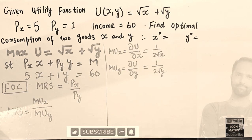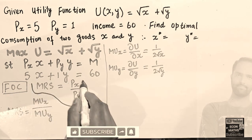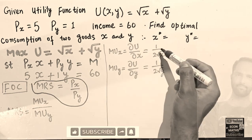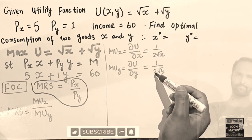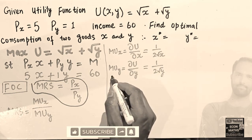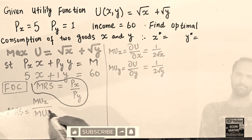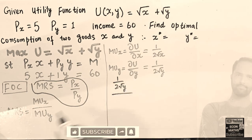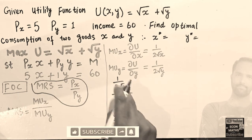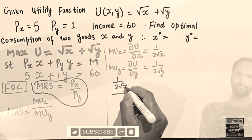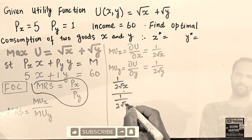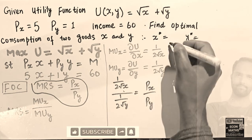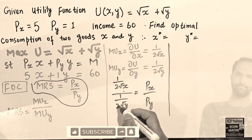Our equilibrium condition is MRS = MUx / MUy. Substituting the values: [1/(2√x)] / [1/(2√y)] = Px/Py. The 2s cancel, leaving √y / √x = Px/Py.